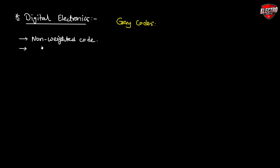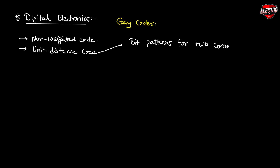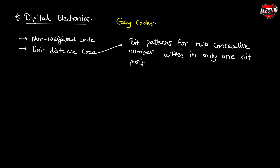Gray code is also known as unit distance code. In unit distance code, bit patterns for two consecutive numbers differ in only one bit position. That is why it is known as unit distance code. It is also known as cyclic code — the meaning being that two consecutive numbers differ in only one bit position.